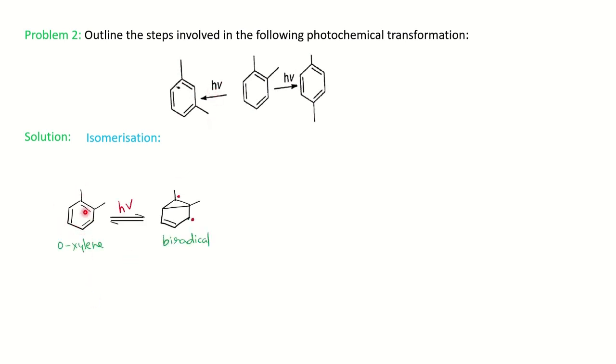You can see we have the starting material ortho-xylene which on photo irradiation will give you the biradical. The mechanism is same like the generation of biradical like we have seen in the previous question. And then these two free radicals will recombine and will give you a bond in between two, and you can rearrange this structure in a way like this.